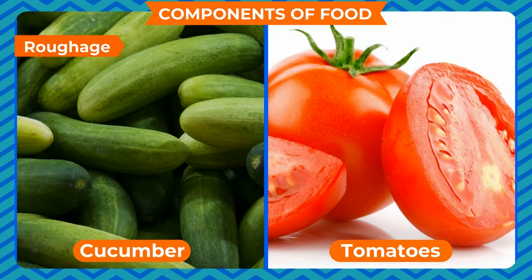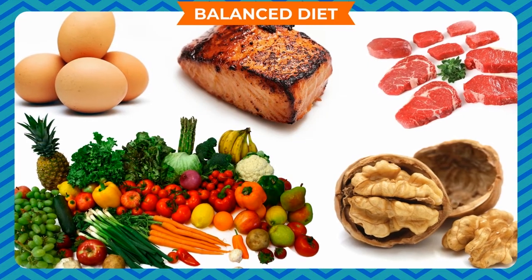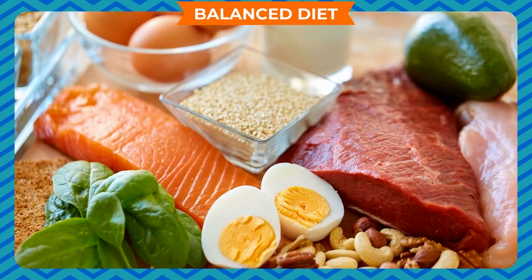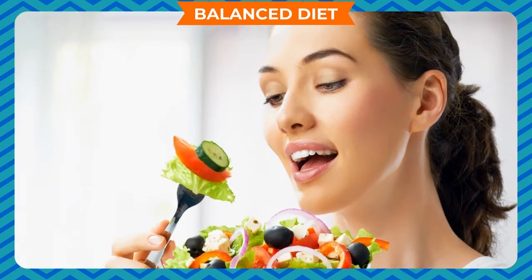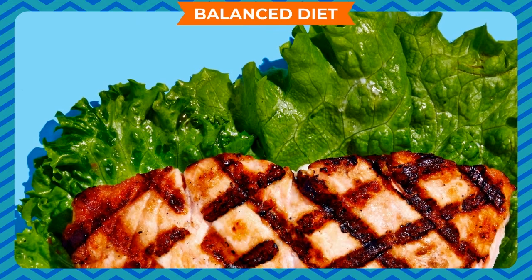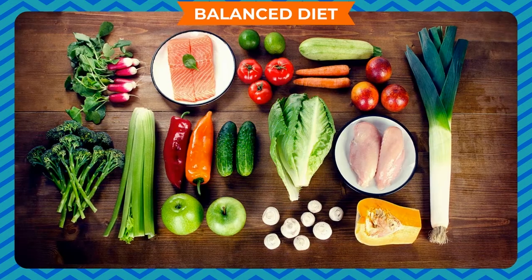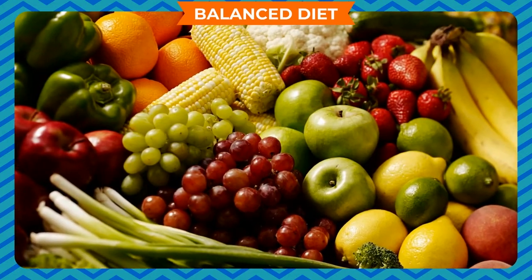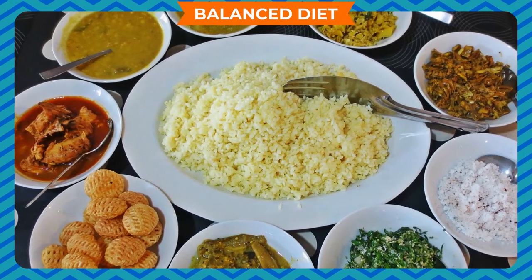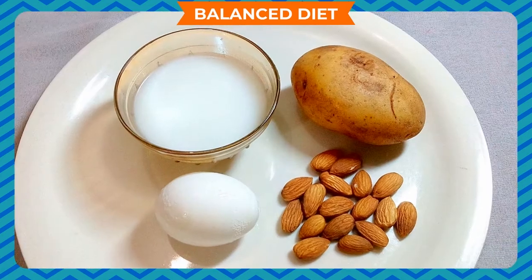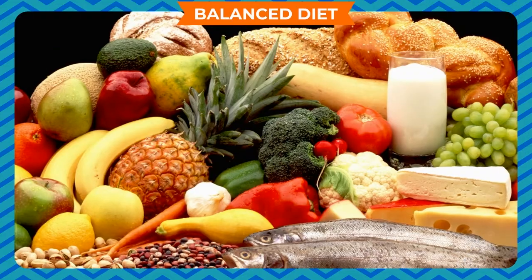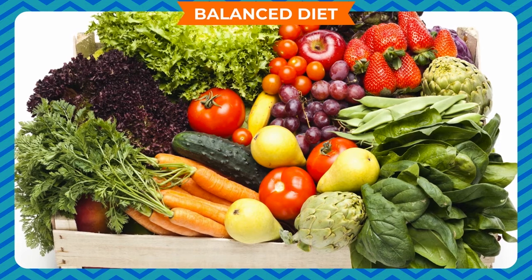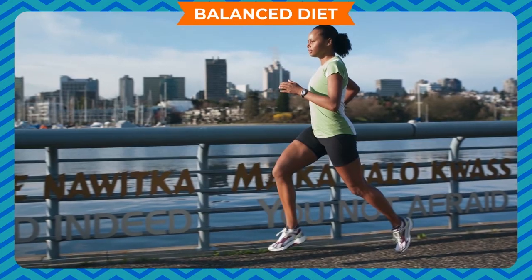It is not sufficient that our body receives all the nutrients — it should also receive them in balanced quantities for proper growth and maintenance. No single food item contains all the nutrients; therefore we need a combination of food items. A diet containing all the nutrients in the right quantities is known as a balanced diet. In a balanced diet, energy-giving foods, body-building foods, and protective foods are present in correct proportions. The proportion of nutrients varies from person to person based on their age and the amount of physical work they do.